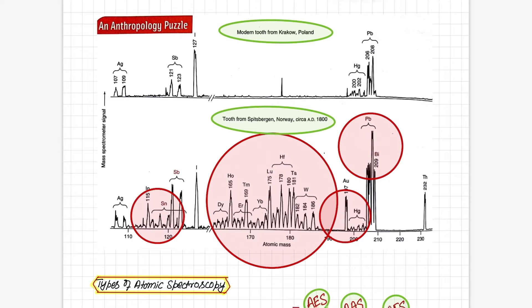Whereas if you see here, this is a modern tooth profile which has been taken from Krakow, Poland. We obtained these two human tooth samples and with the help of atomic spectroscopy we looked at the atomic contents and elements present in them to see which elements were there. If you see the difference, many peaks are present here for lanthanides and actinides. This is the elemental profile you can see.